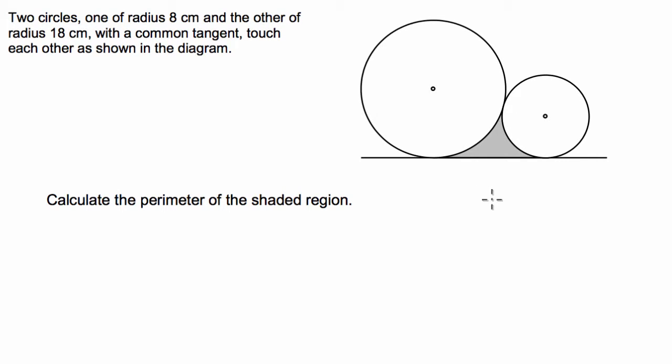There are three different lengths that we have to find in this perimeter question. We have to find the length of the distance between where the big circle touches the ground and where the small circle touches the ground, and we also have to work out the lengths between where they touch each other and where they touch the ground. So the way we're going to do this is we're going to draw a trapezium to help us find some angles.